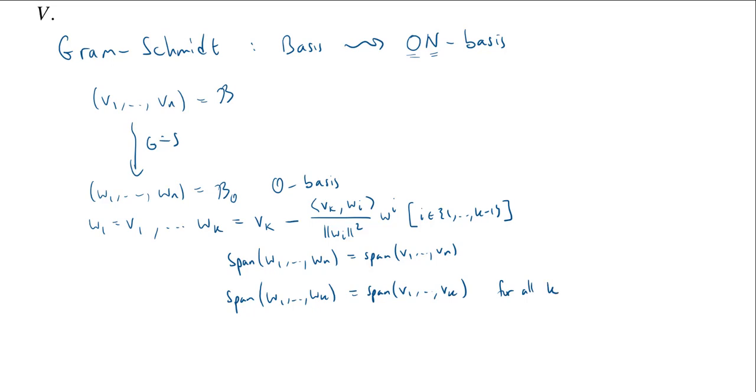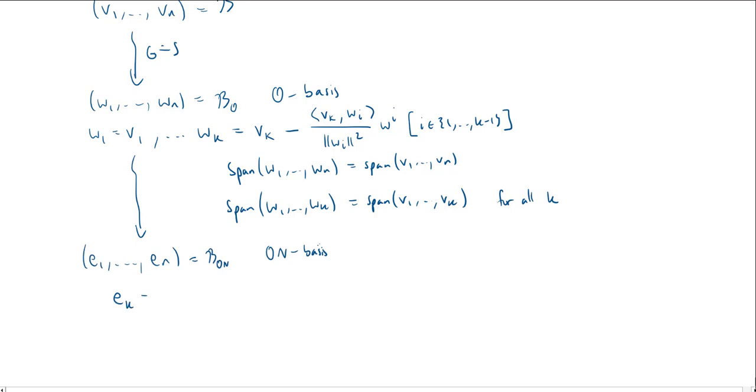So this is going to be useful when we try to look at the matrix for the operator T with respect to B or BO. Now, of course, we could keep going and normalize. And the nice thing when we normalize is it's not really going to change the span at all. So I can keep going down here and I could get my orthonormal basis, E1 through EN, and this could be BON, an orthonormal basis. But remember the way we get those E's - if I wanted to compute EK, this will just be one over the norm of WK times WK. So it's just scaling it.